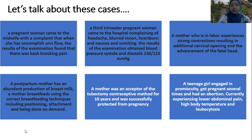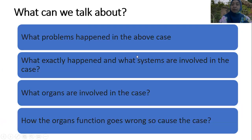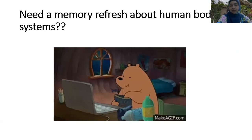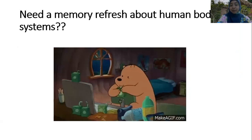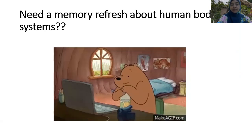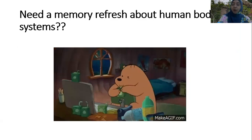We have six cases to solve. We will talk about what systems are involved, what organs are involved, and how to analyze each case. But before we start, let's do a memory refresh about the human body systems — how each system works, how organs affect the system, and what problems can occur.